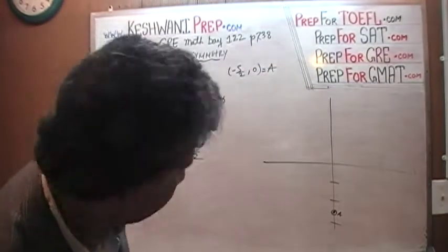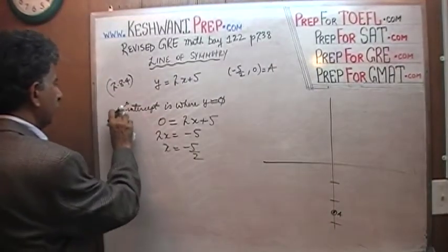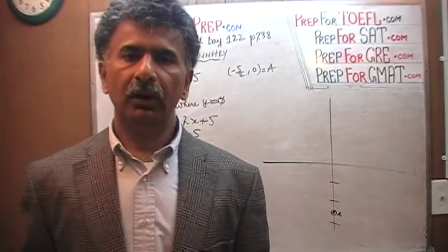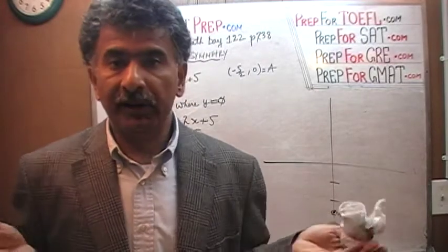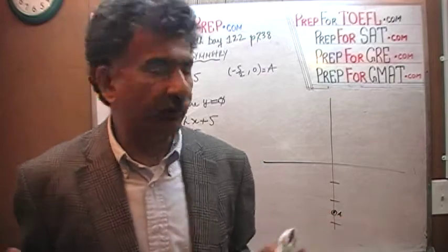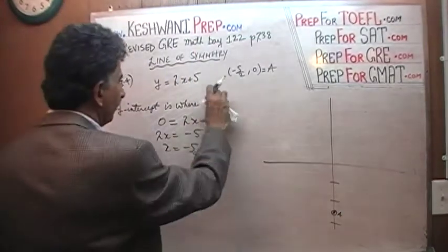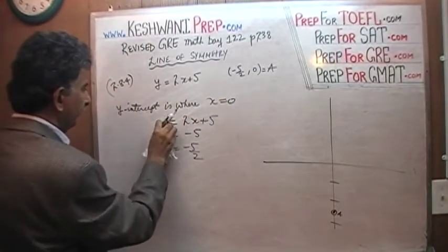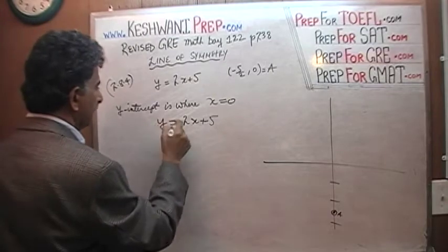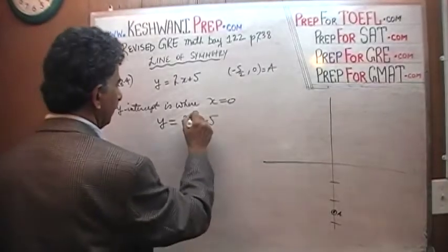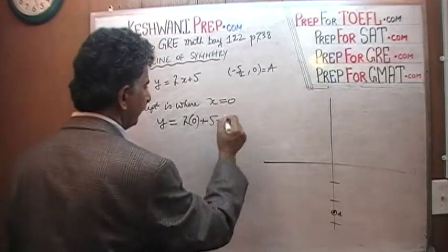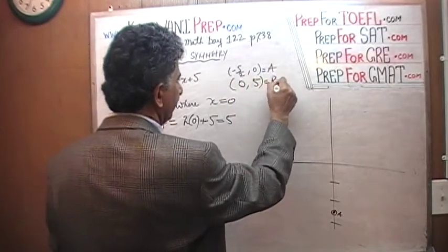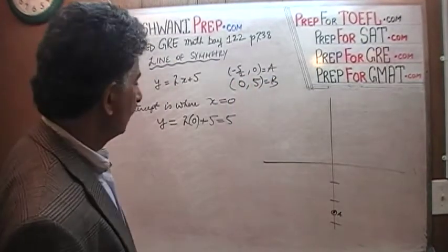Now let's find the y-intercept. The y-intercept is where the line cuts the y-axis — that's where the x-coordinate is 0. So we put x equal to 0 into the equation: y equals 2 times 0 plus 5, which gives y equals 5. So when x is 0, y is 5. Let's call that point B: coordinates 0 and 5. That's our y-intercept.